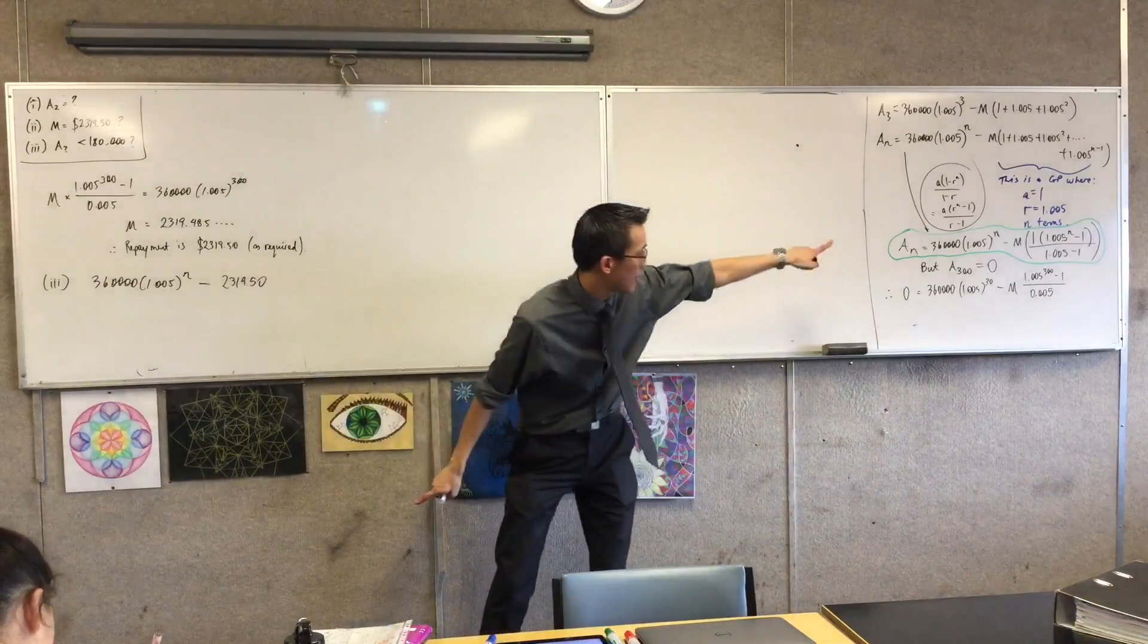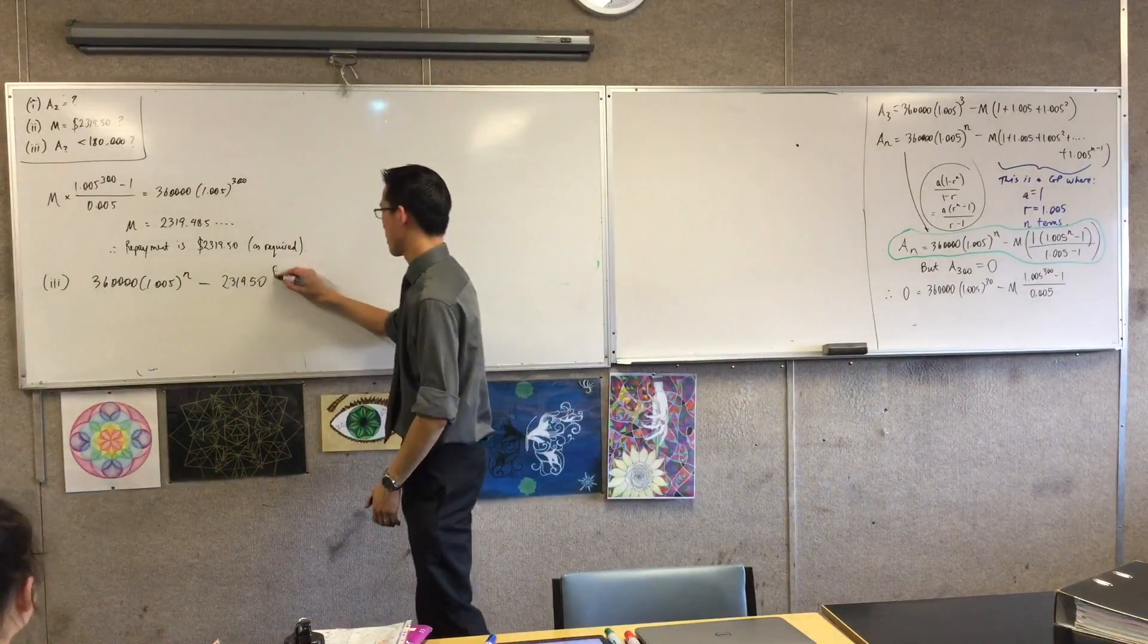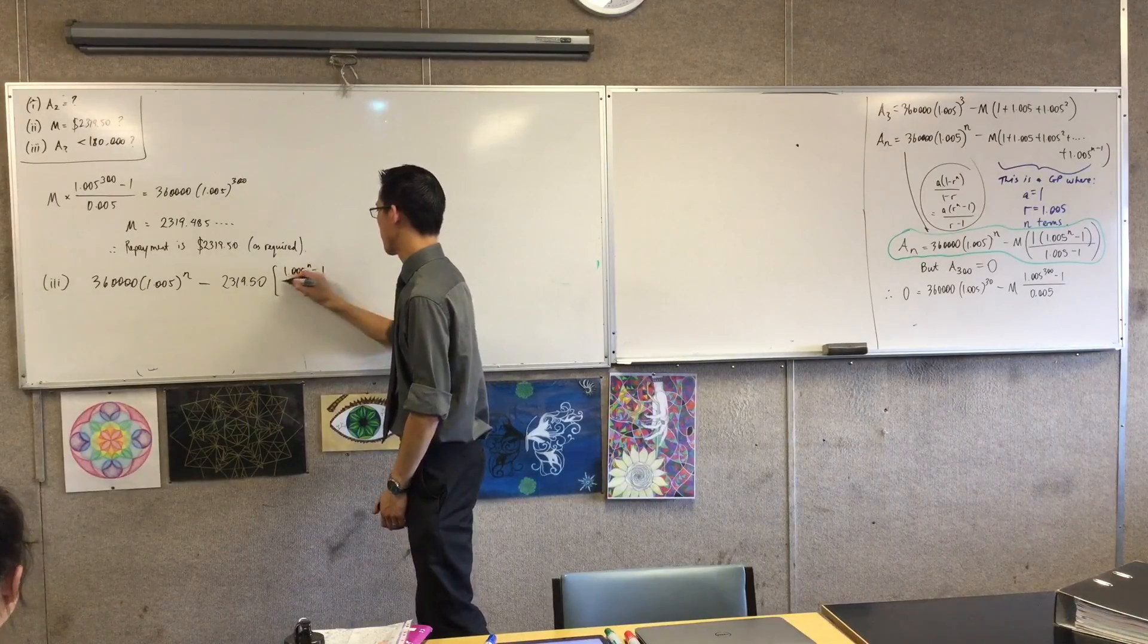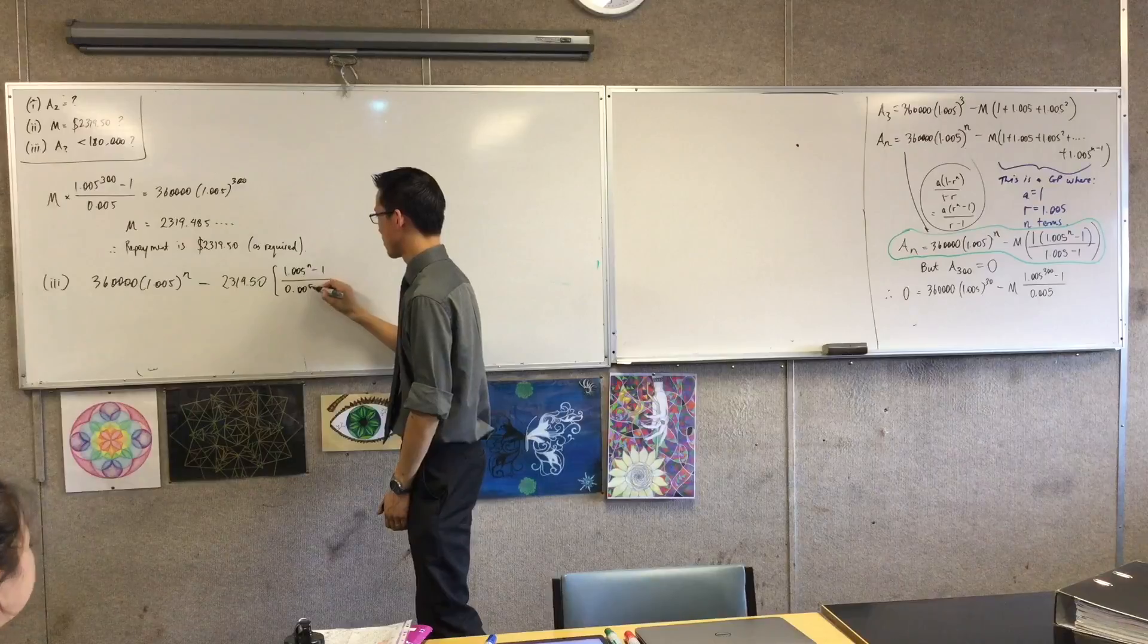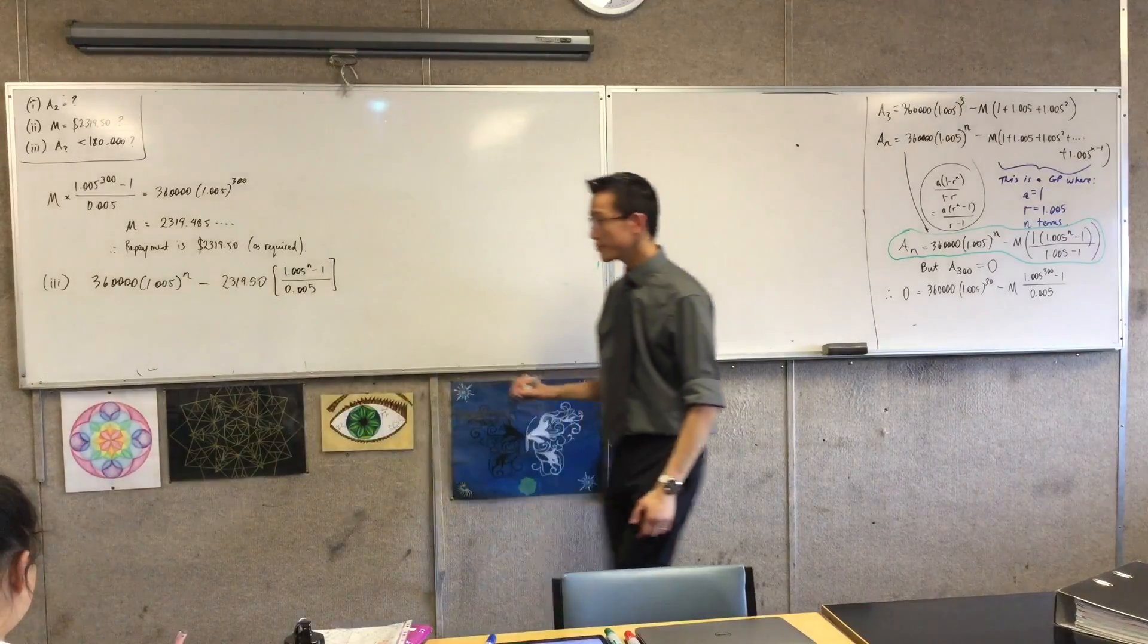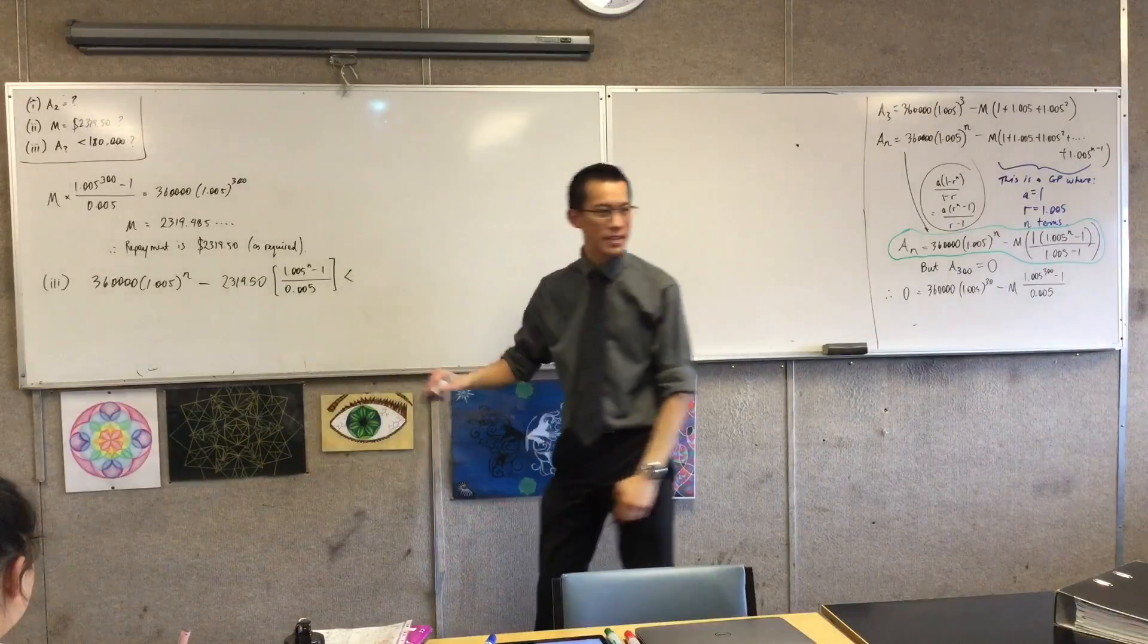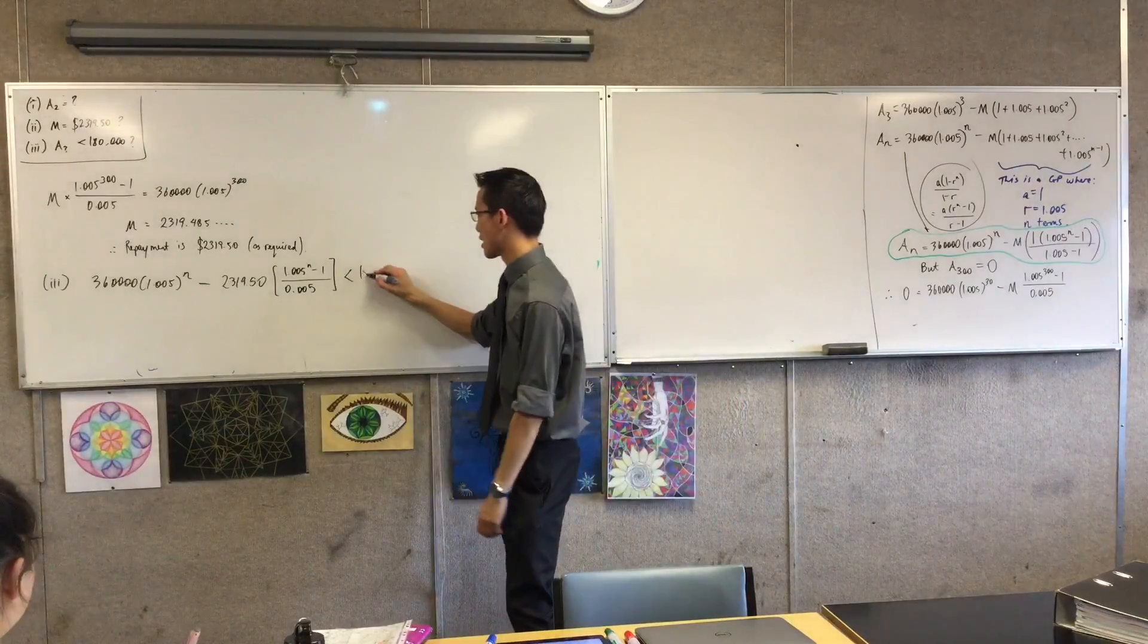So there's my M, and I have this big gross fraction, right? So can we divide, like, two, three, one, nine, five? Yeah, so I'll talk about that in a second. Now, what I want this to be is less than 180,000.